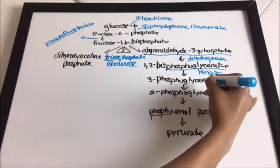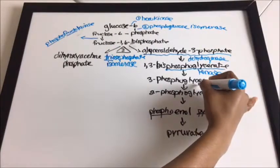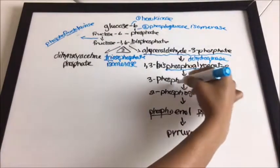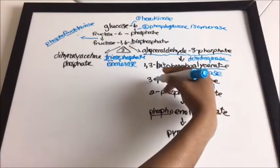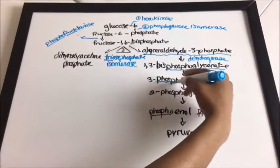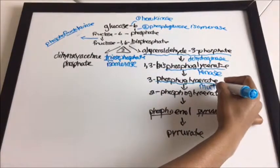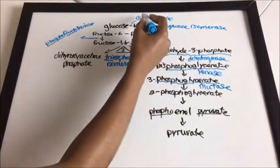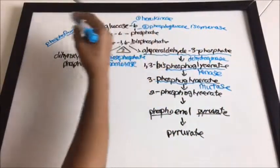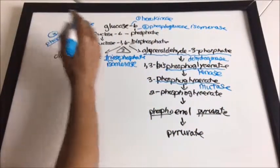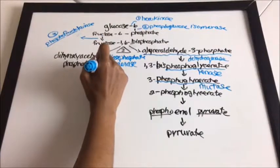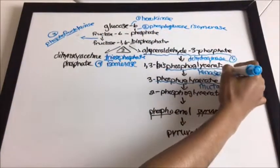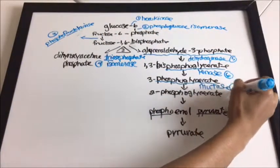The next enzyme is phosphoglycerate mutase. Again, bring down the name and add 'mutase.' So we have enzymes one through seven so far.